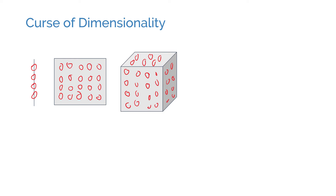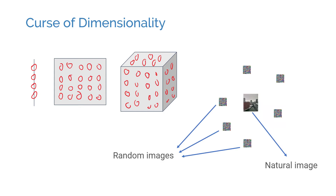In reality, natural data have regularities and don't really use the entire parameter space. If our data consists of images, for example, natural images make up only a small portion of every possible combination of pixel values. We can encode such inputs using fewer parameters by capturing a lower dimensional manifold that explains the data.